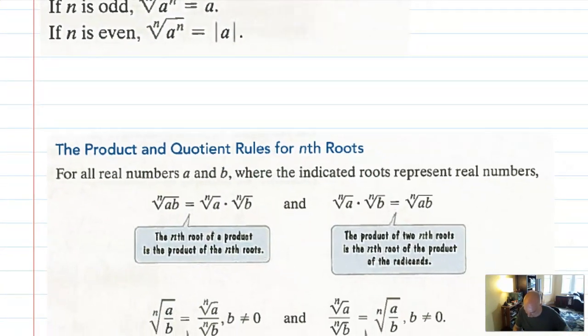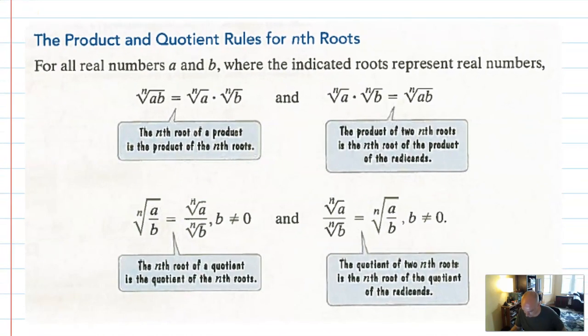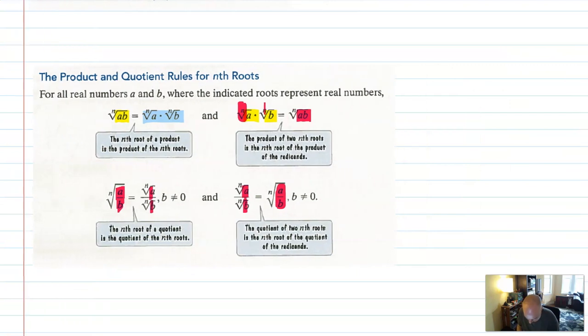And then another thing that I'm going to borrow from the book, the product and quotient rules for nth roots work the same way as the product and quotient rules for all other roots. If you have a product underneath a radical, you can split that radical into two. If you have two radicals of the same index, by the way, it has to be the same index. You can combine them under the same index and same with fractions. You can split them and you can combine them with fractions. You have to be sure you're not dividing by zero as well.